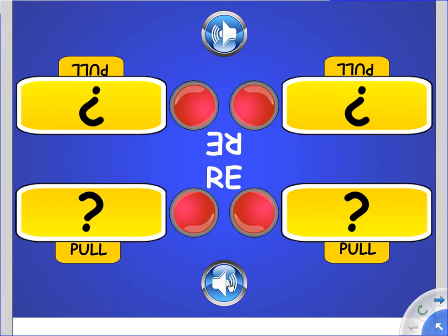Guess the re words that are hidden under each yellow box. Press the red button to hear your clue and then make a guess. Pull the tab down to see and hear the correct word.